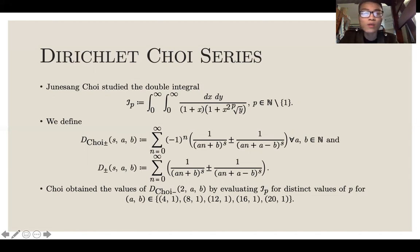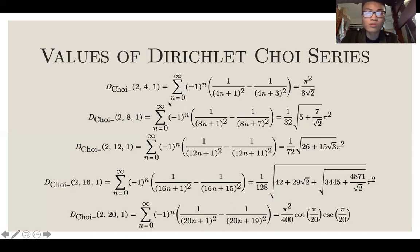What Choi did is that he found five values of D-Choi minus 2ab for ab: 4,1; 8,1; 12,1; 16,1; and 2,1. In other words, here are the values he found. For 2, 4, 1, he found pi squared over 8 radical 2. For 2, 8, 1, he found this. For 2, 12, 1, he found this. For 2, 16, 1, he found this. And for 2, 2, 1, he found this.